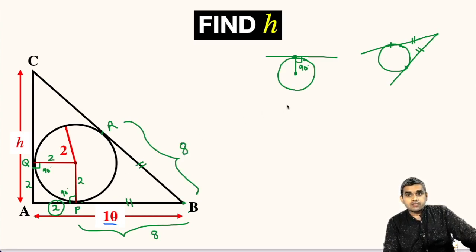Now, we will apply the same theorem here also. Point C is the external point and CR will be 1 tangent likewise CQ will be another tangent and they are equal in length.